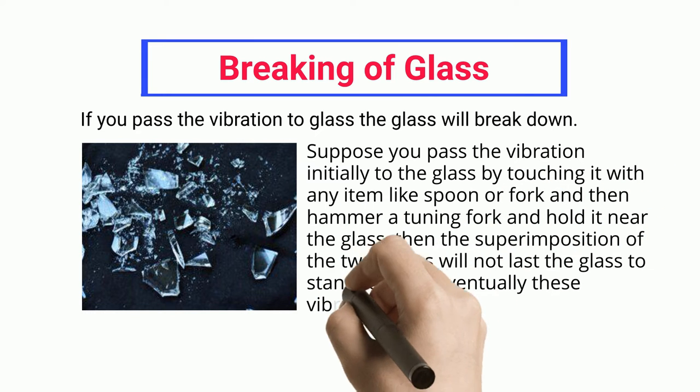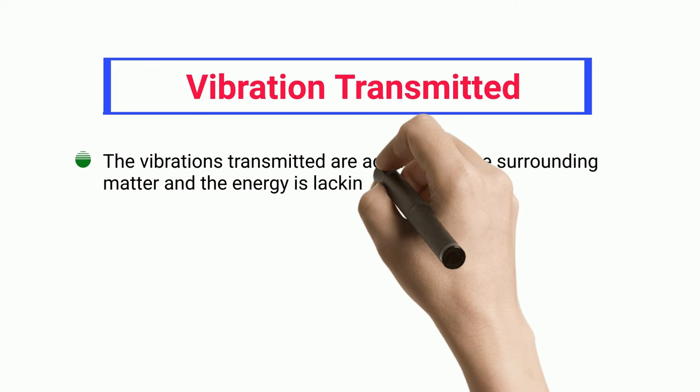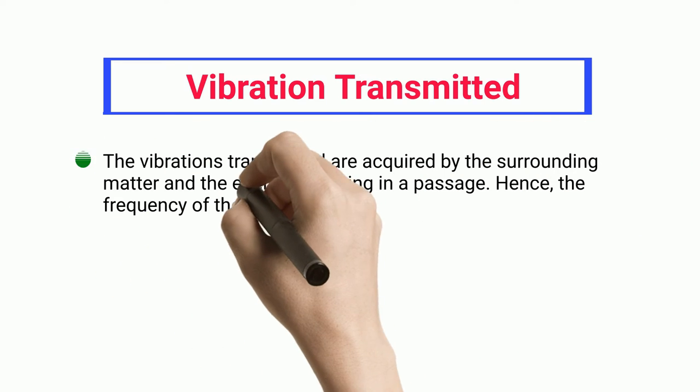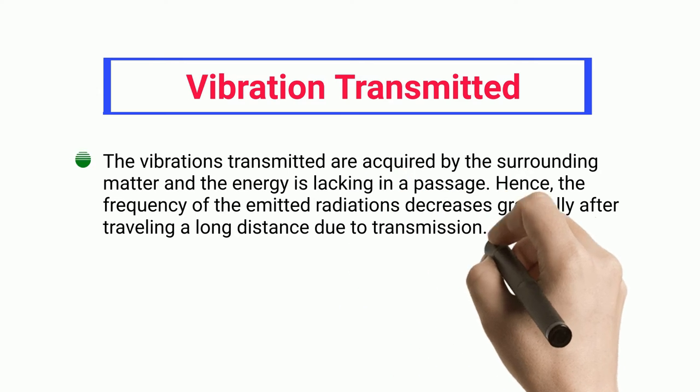For long, eventually these vibrations lead to glass break. Vibration transmitted - the vibrations transmitted are acquired by the surrounding matter and the energy is lacking in passage. Hence, the frequency of the emitted radiations decreases gradually after traveling a long distance due to transmission.